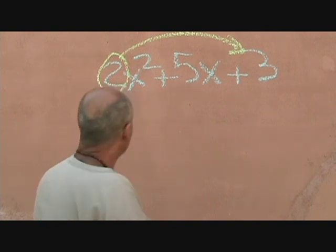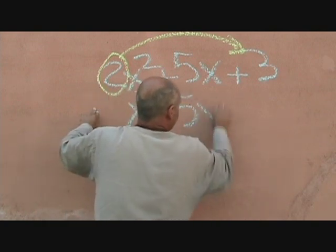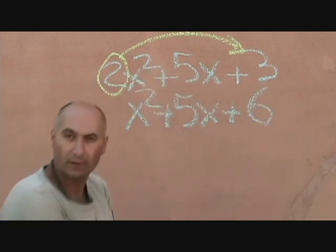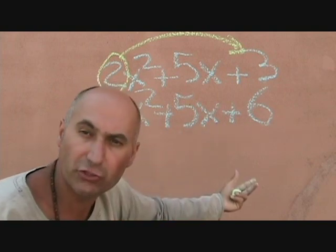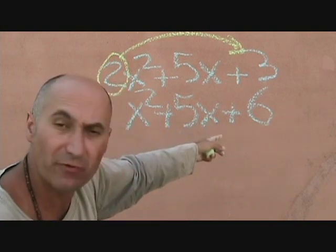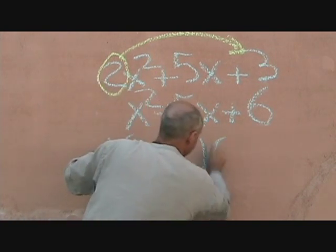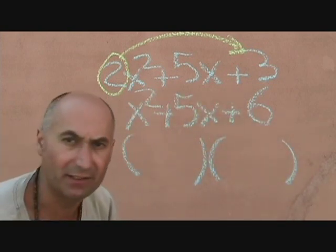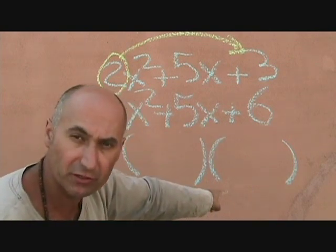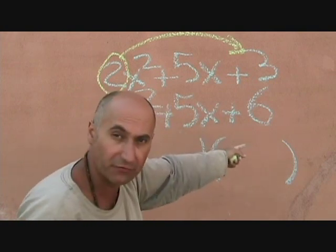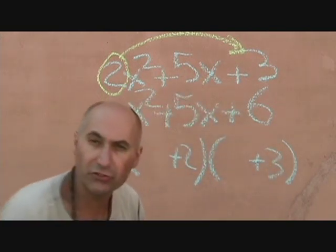So your next line becomes x squared plus 5x plus 6. This now becomes a simple trinomial. We can factor this — you take the two numbers that multiply to give you 6 and add to give you 5, that's 2 and 3. So you put plus 2 and plus 3 in your brackets.